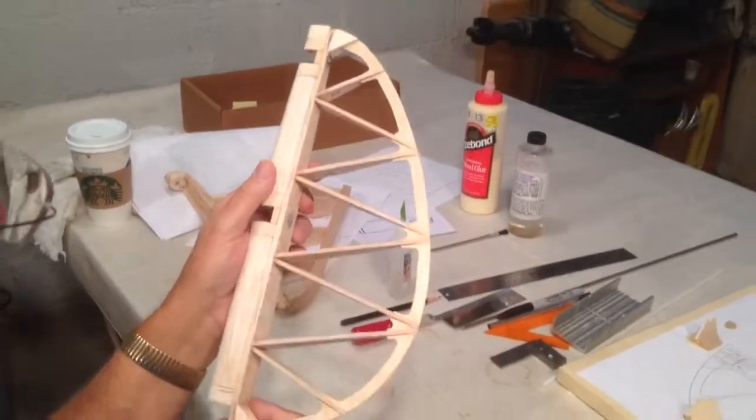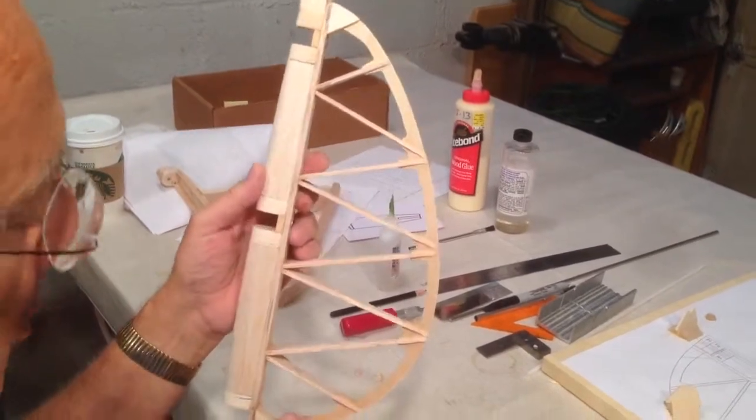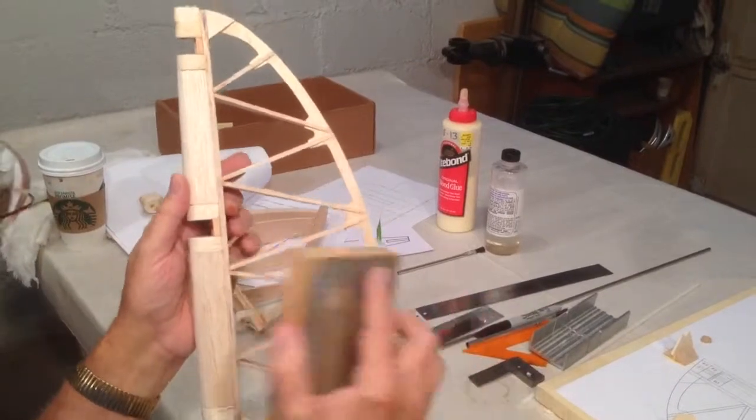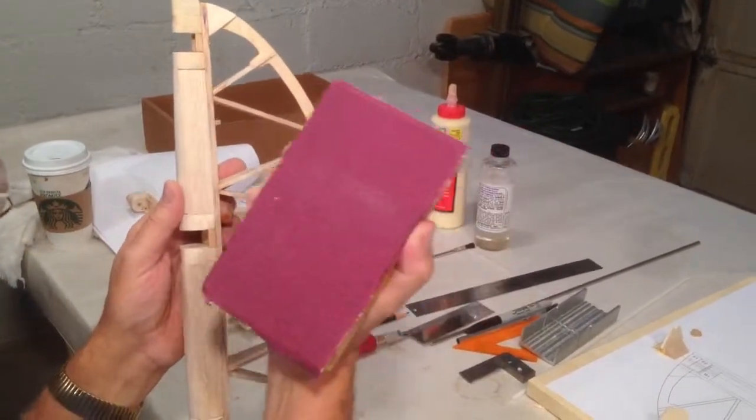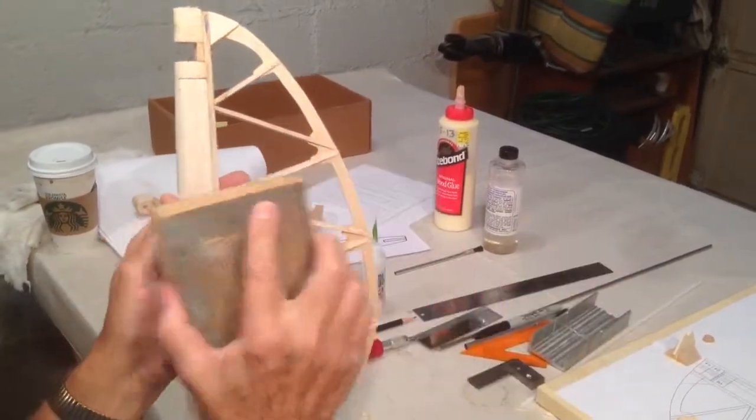There's still more sanding to do, but this will give you the general idea of how it's done. When you're done with the 60 and you know you're done, you might just give it a pass with 100 grit. This is all the finer grit you will need, and away you go.